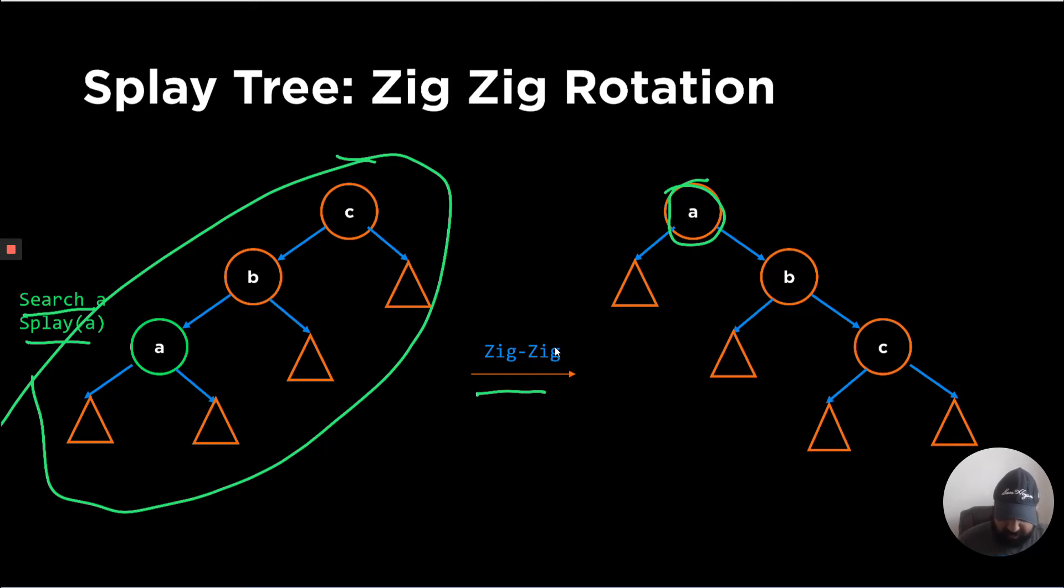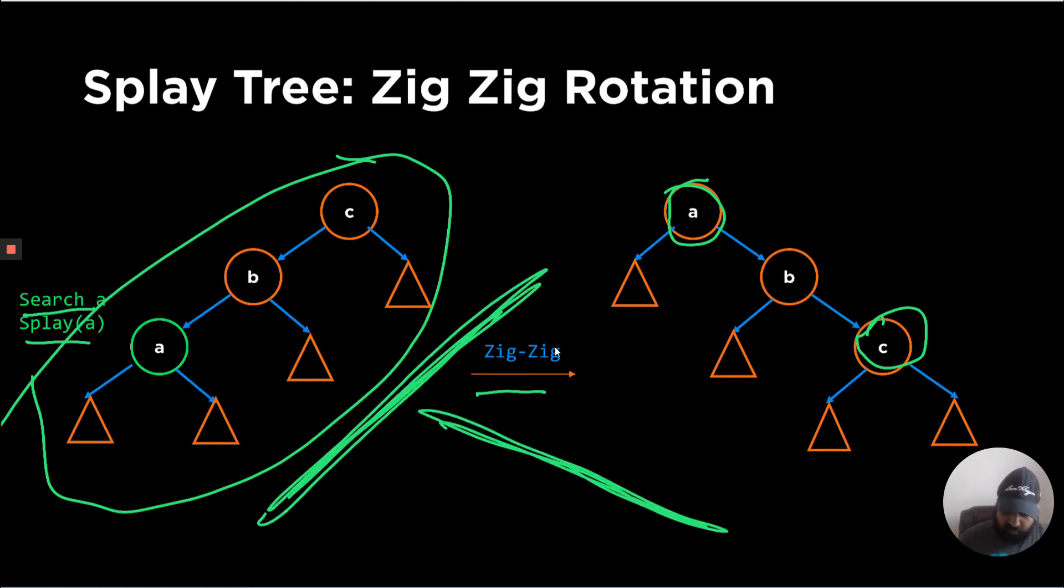Now this property of BSTs is still satisfied because you can see that C was greater than both A and B, and C is still greater, which is semantically everything looks the same. It's just a different type of operation. So zigzag has two different ways, which is if the tree looks like this or the tree looks like this. Both ways you can perform a zigzag operation.